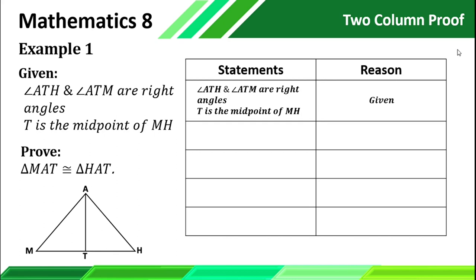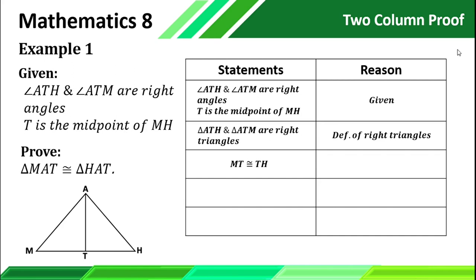We have right angles here. Always remember that if we have right angles, automatically that triangle will be a right triangle. So if angle ATH and angle ATM are right angles, we can conclude that triangle ATH and triangle ATM are right triangles, because of the definition of right triangles. Next, since T is the midpoint of MH, we can say that MT is congruent to TH by the definition of midpoint.